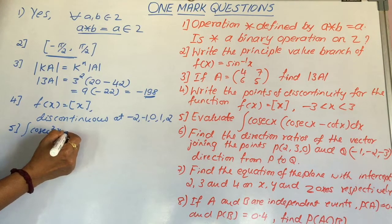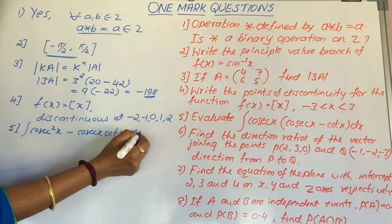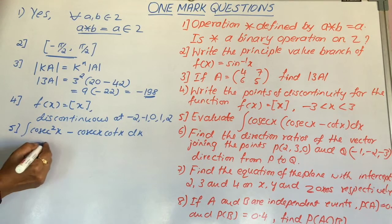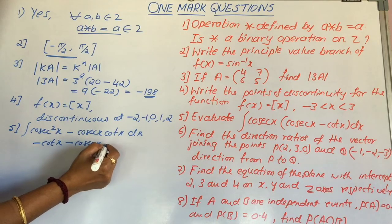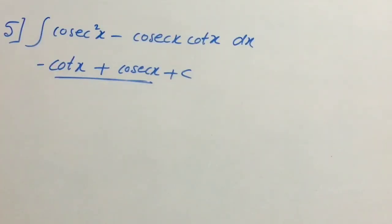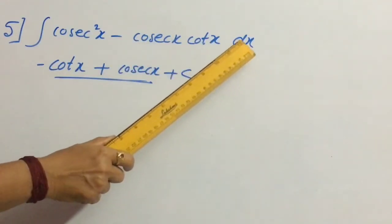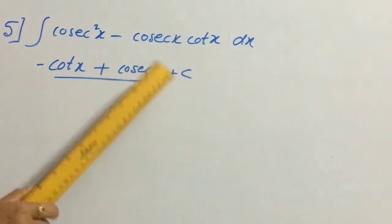To evaluate that let us multiply the terms that becomes cosecant square x minus cosecant x cotangent x dx. And we know that integral cosecant square x is minus cotangent. Integral cosecant x cotangent x is cosecant x plus c. Therefore, for question number 5, integral cosecant square x minus cosecant x cotangent x dx is minus cotangent plus cosecant x plus c.